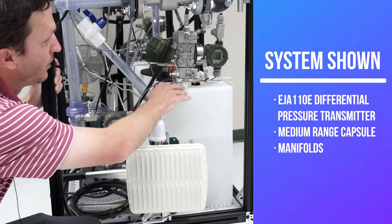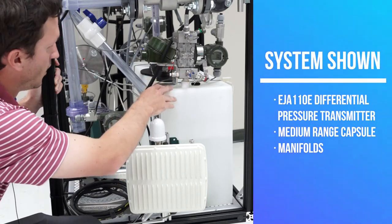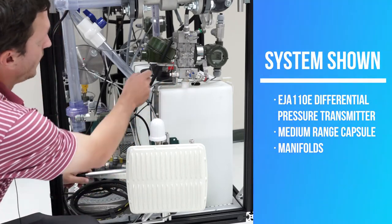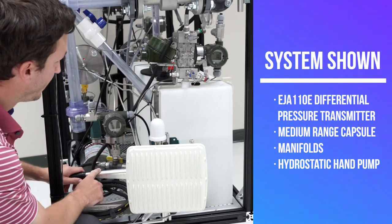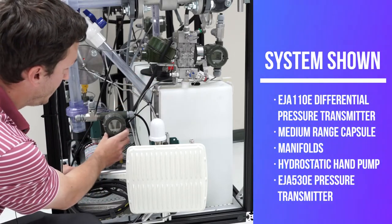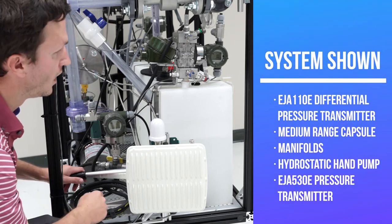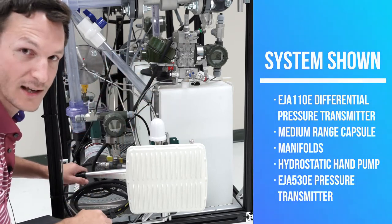I've got all this set up and we'll go through how to orient these valves. I've also got it hooked through piping to a hydrostatic hand pump, and then I have an EJA-530E that will show us how much pressure we're putting on just the low side of that transmitter.